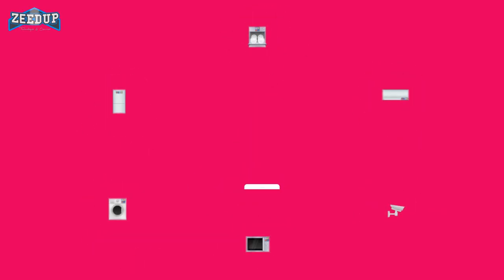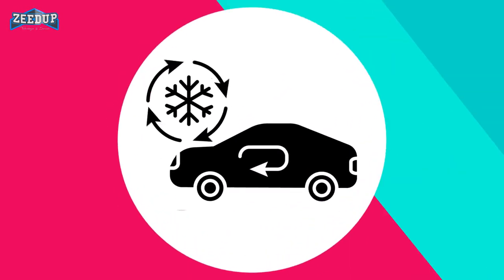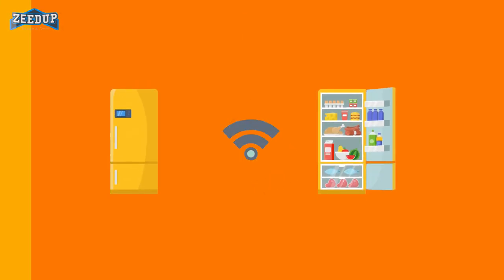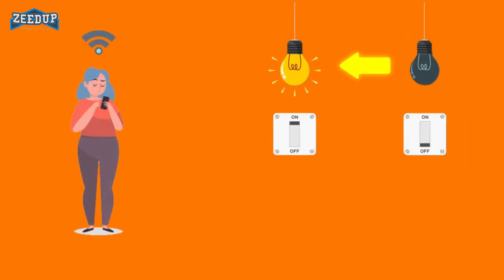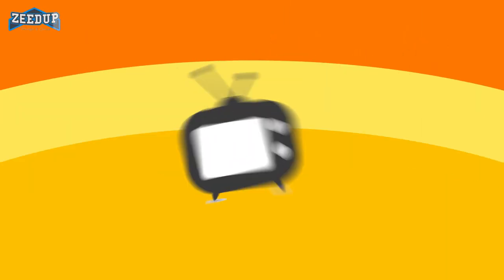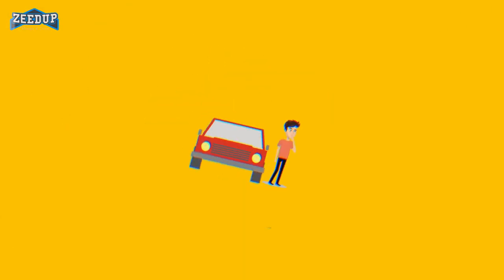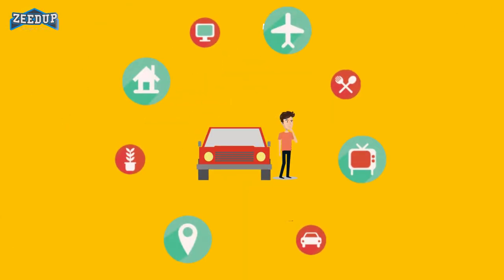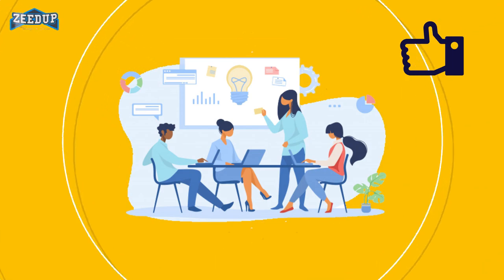For example, while leaving the office, switch on the AC, check what groceries you have in your fridge, draw the curtains of your bedroom, tell it to switch on lights in 15 minutes, and start recording the next episode of Big Bang Theory — all this while going down the stairs to your car. Companies have realized the potential of smart homes and have started working on it.